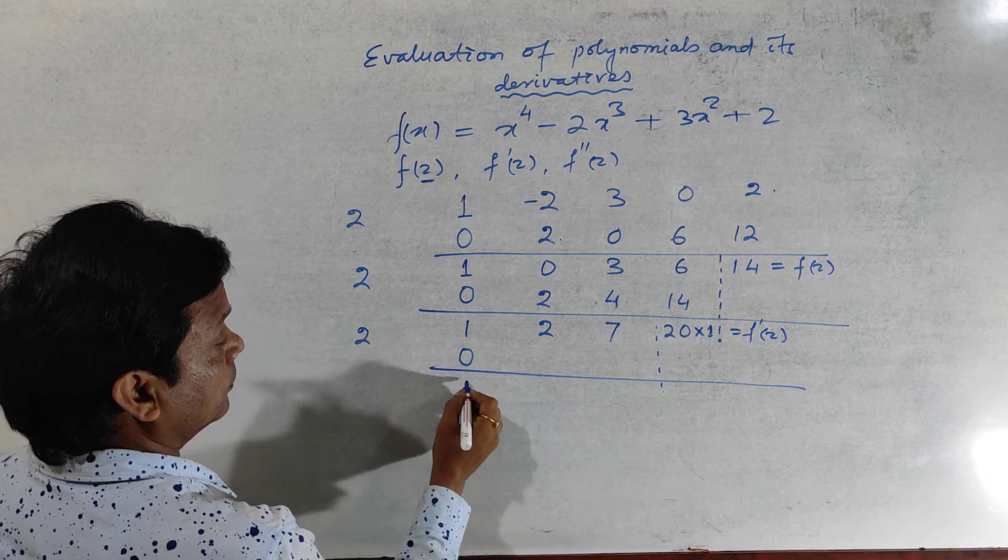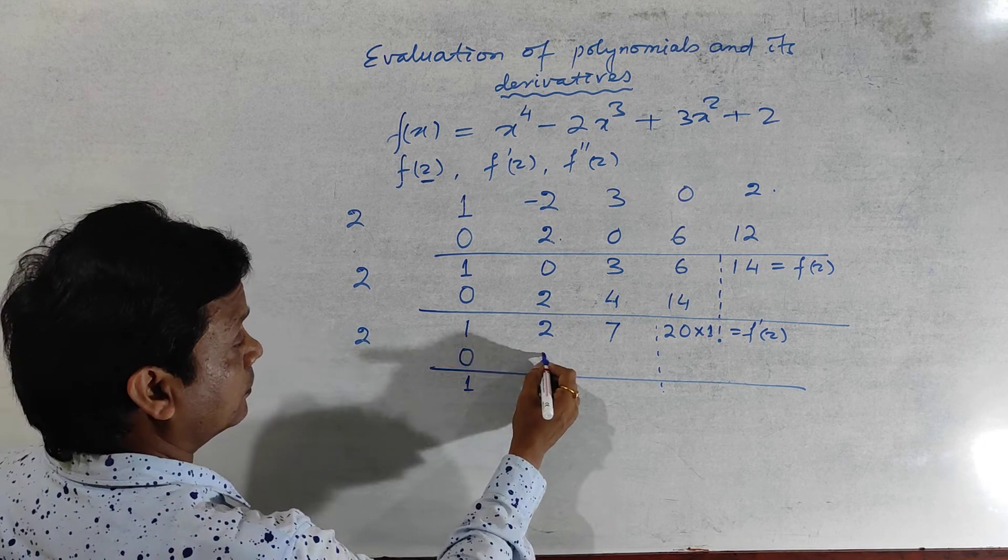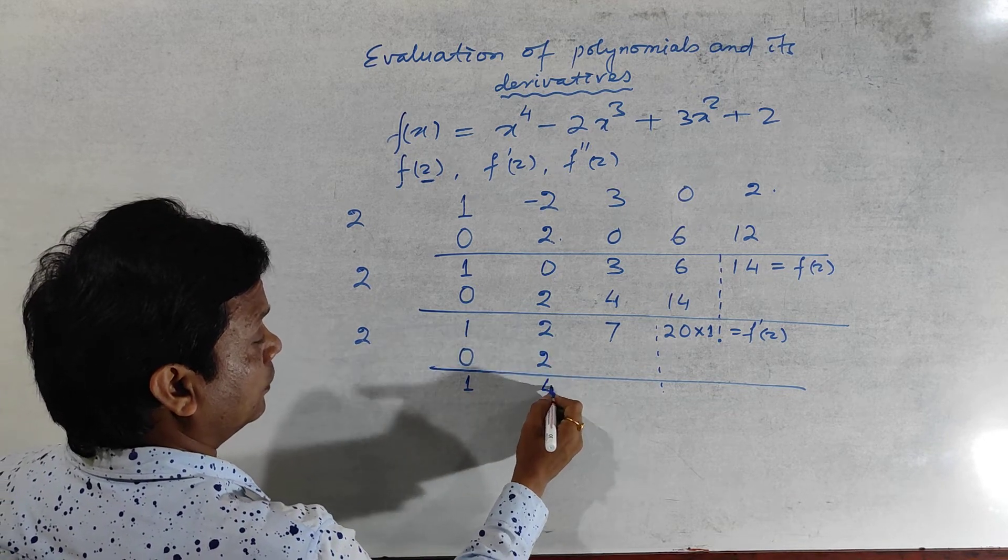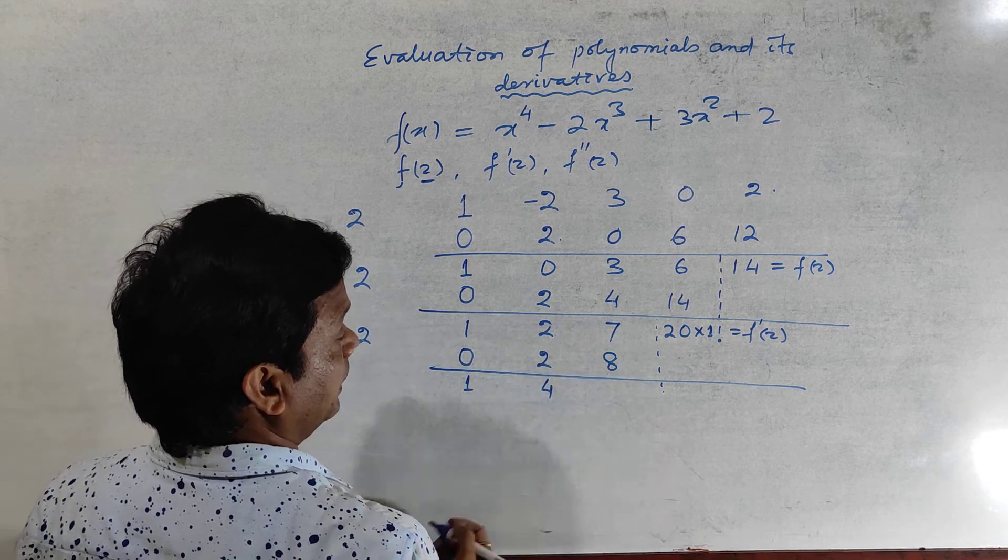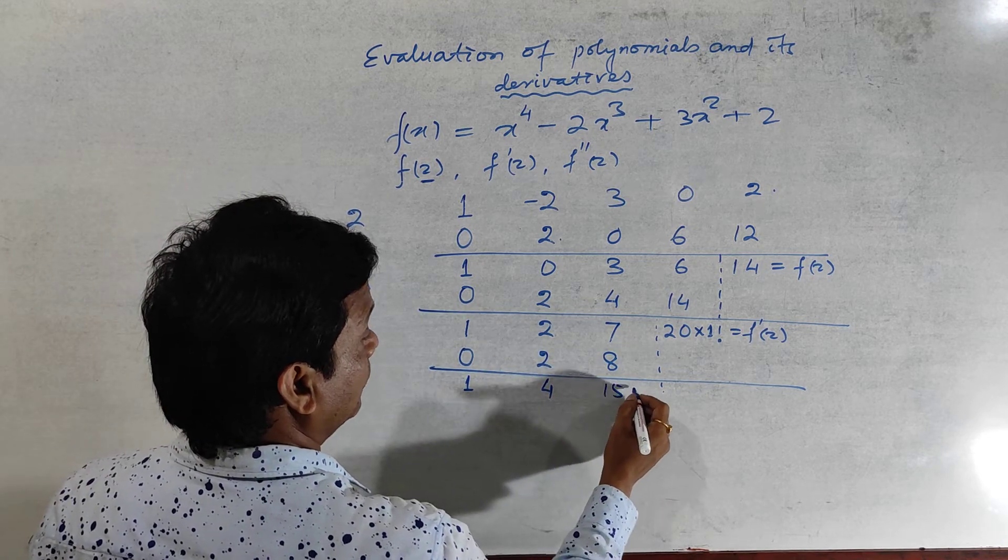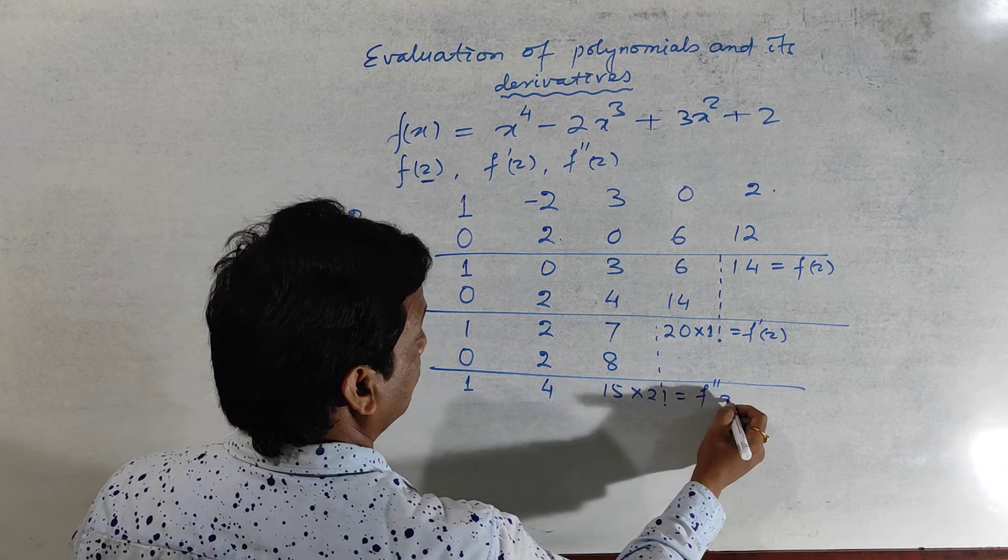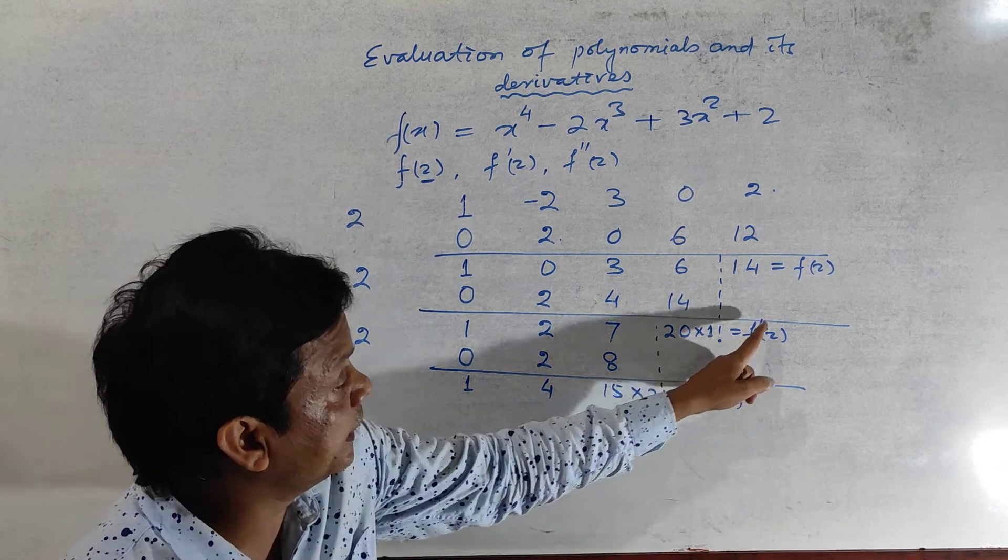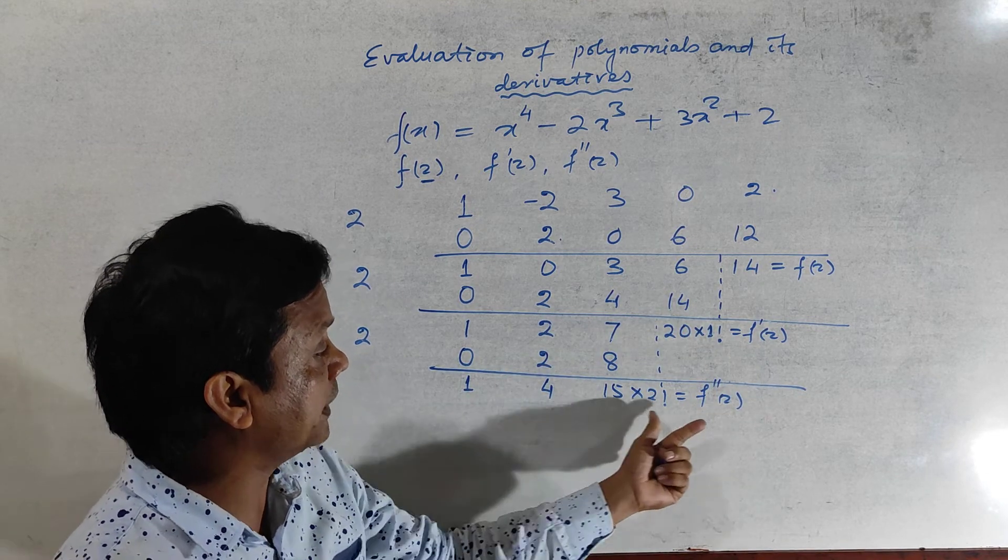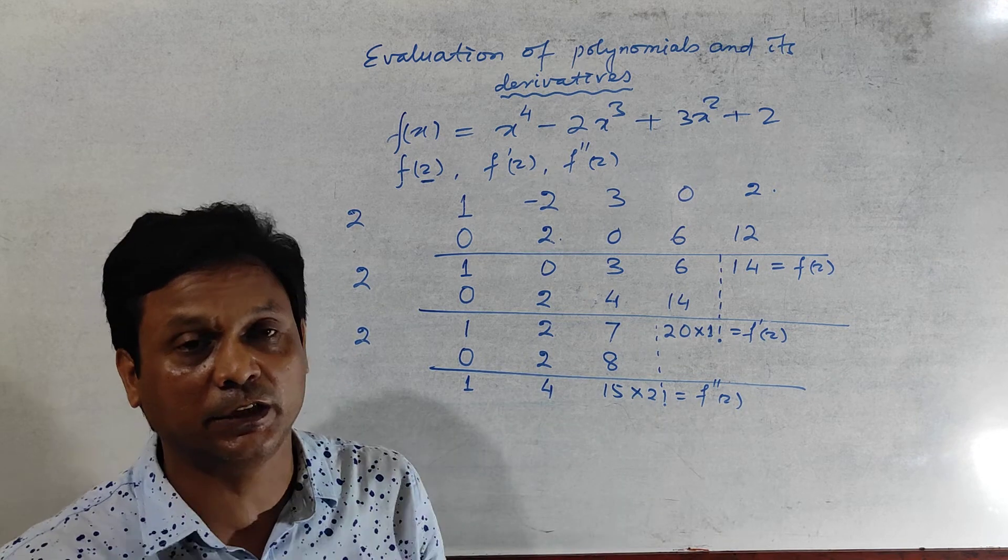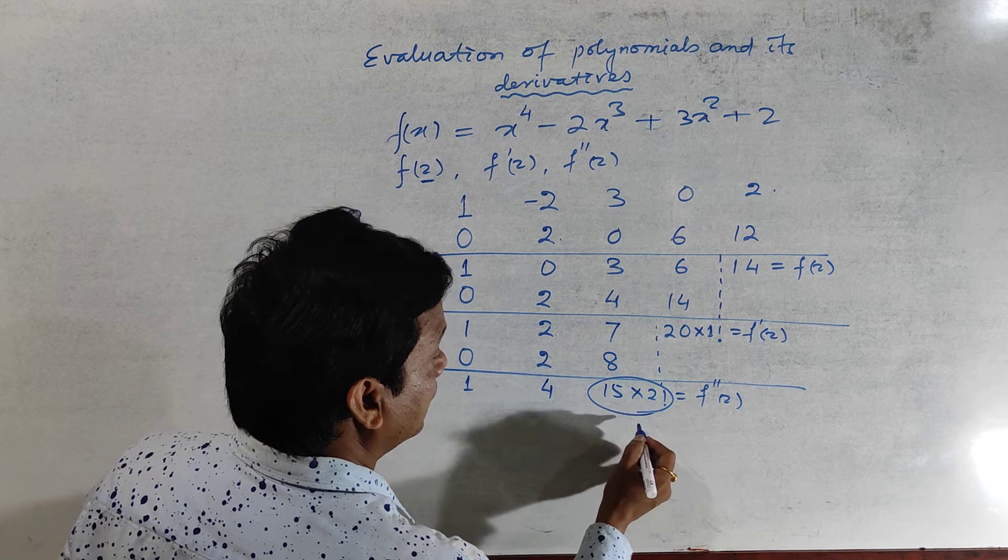So 0, this is 1, 1 plus 0 is 1, 1 into 2 is 2. So 2 plus 2 is 4, 4 into 2 is 8, so write 8 here. So 8 plus 7 this is 15, so 15 into factorial 2. For f dash 2, for single derivative you should multiply factorial 1. For double derivative you should multiply factorial 2, and for third derivative you should multiply factorial 3, and so on. Here that means the answer will be 30.